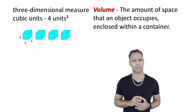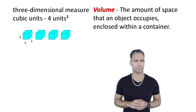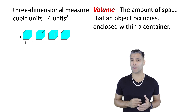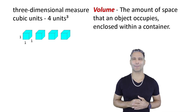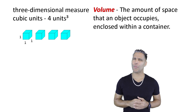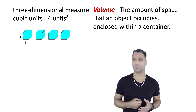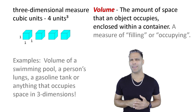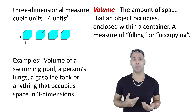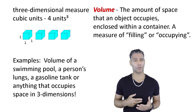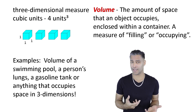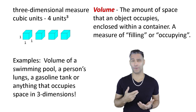On to volume. Volume is a three-dimensional measure. Volume measures how much space an object occupies, and we use cubic units to measure how much space is being occupied. We can think about volume like filling up an object or occupying a certain amount of space. Examples of volume may be the volume of a swimming pool, the volume of a person's lungs, or maybe even the volume of a gasoline tank, or anything that can be filled up.